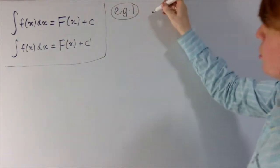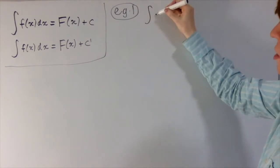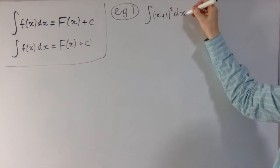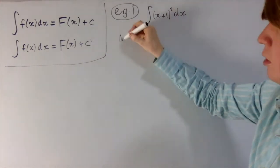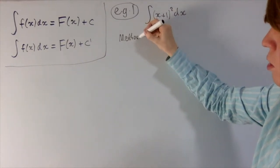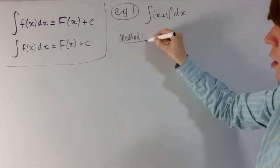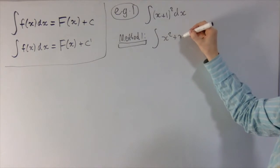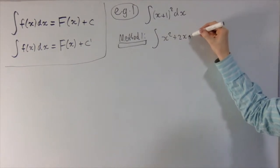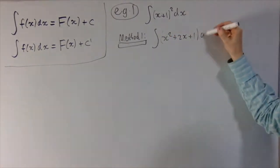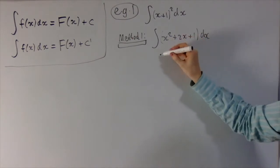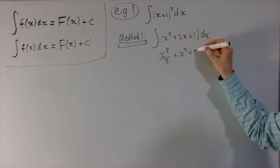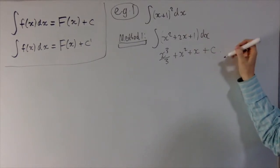The first example we will look at is just the integral of (x+1) all squared. For this indefinite integral, the first method we can do is expand the brackets. So you get x squared plus 2x plus 1 dx. Then we integrate this, you get x cubed over 3 plus x squared plus x plus some constant.